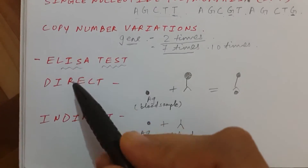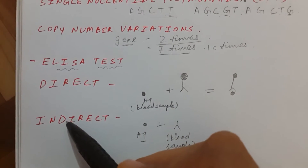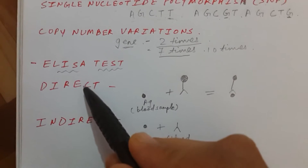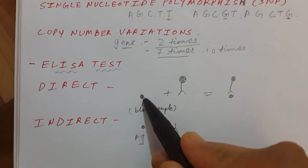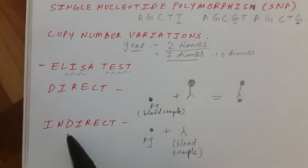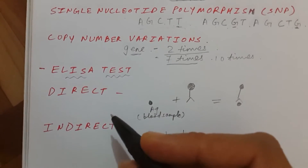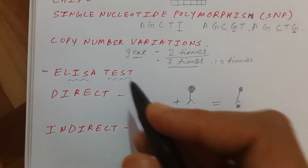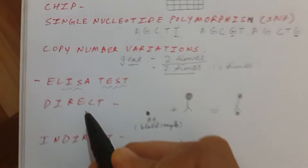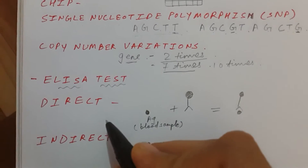Another test is the ELISA test, and it is quite a simple test. There are two types: direct ELISA test and indirect ELISA test. In direct ELISA we detect antigen; in indirect ELISA we can detect antigen or antibody, but usually it is antibody.